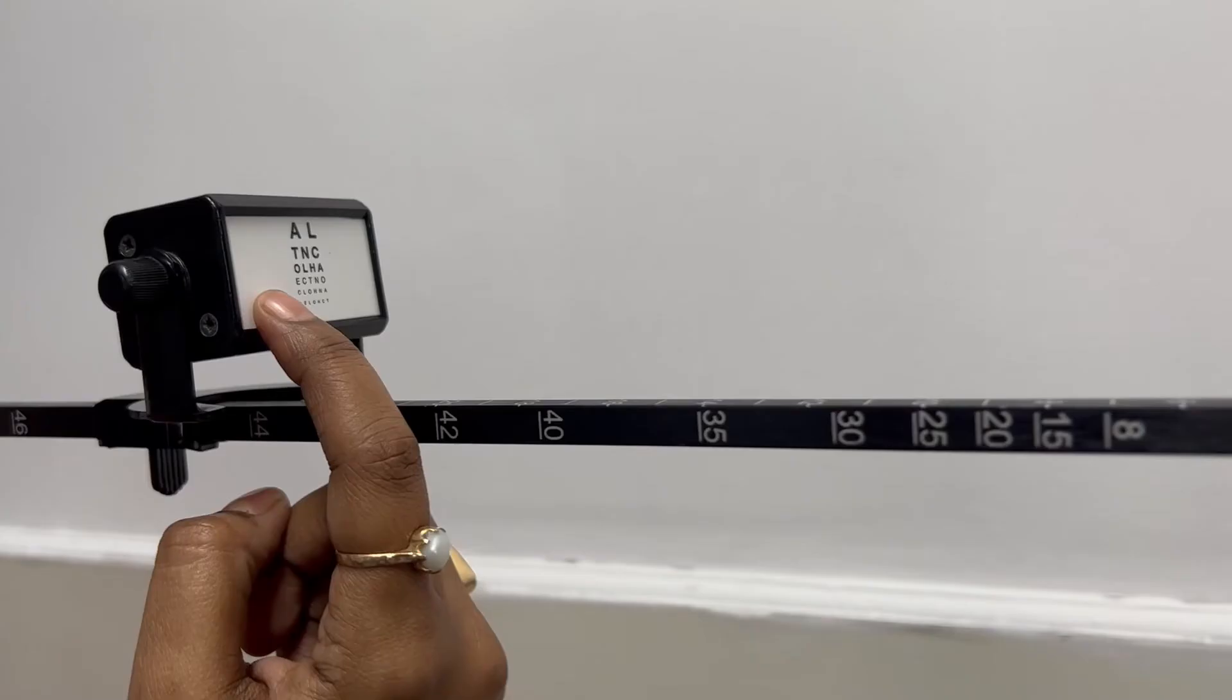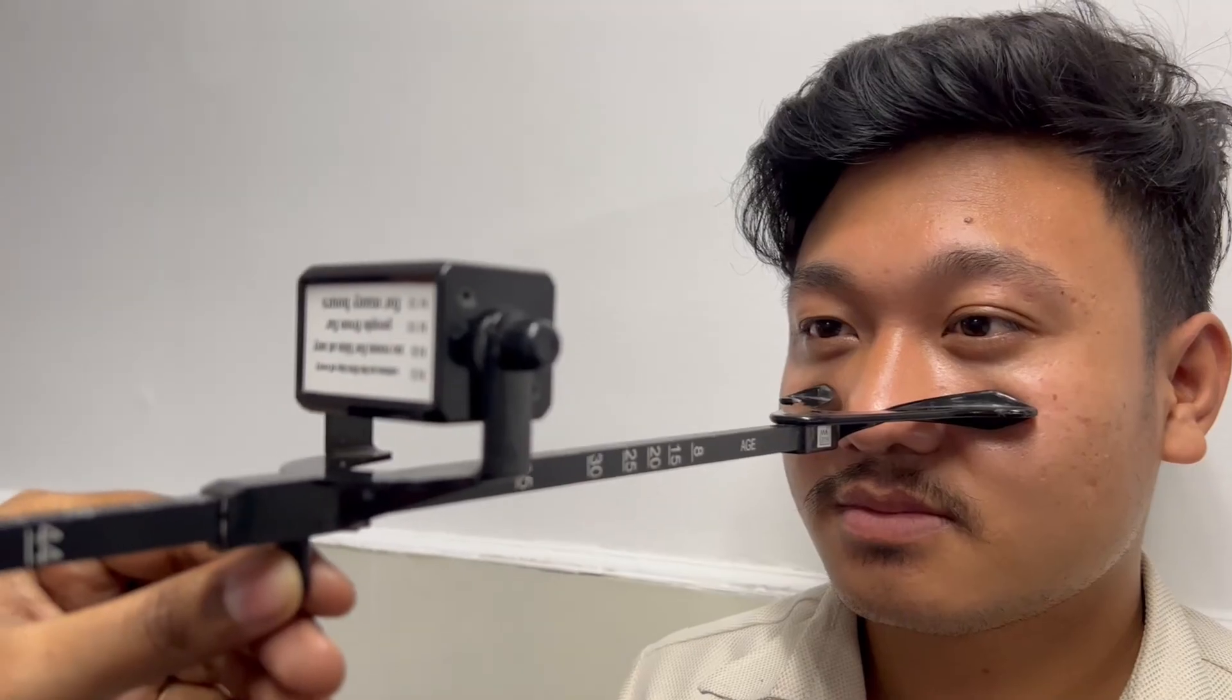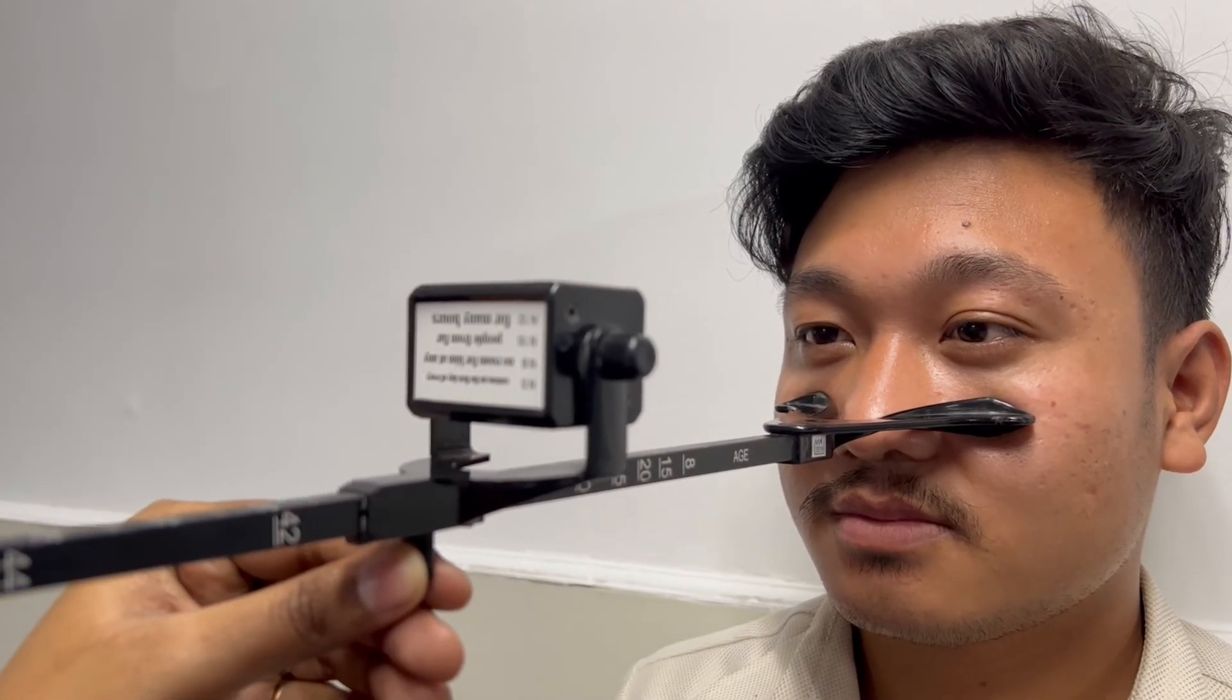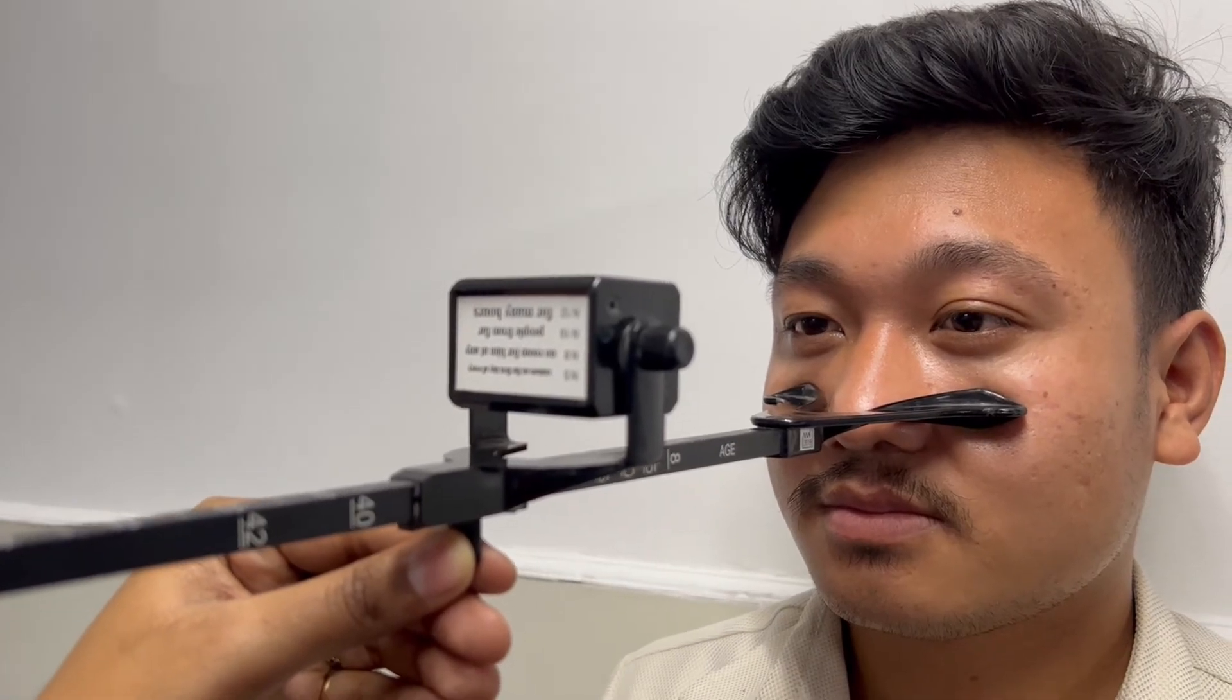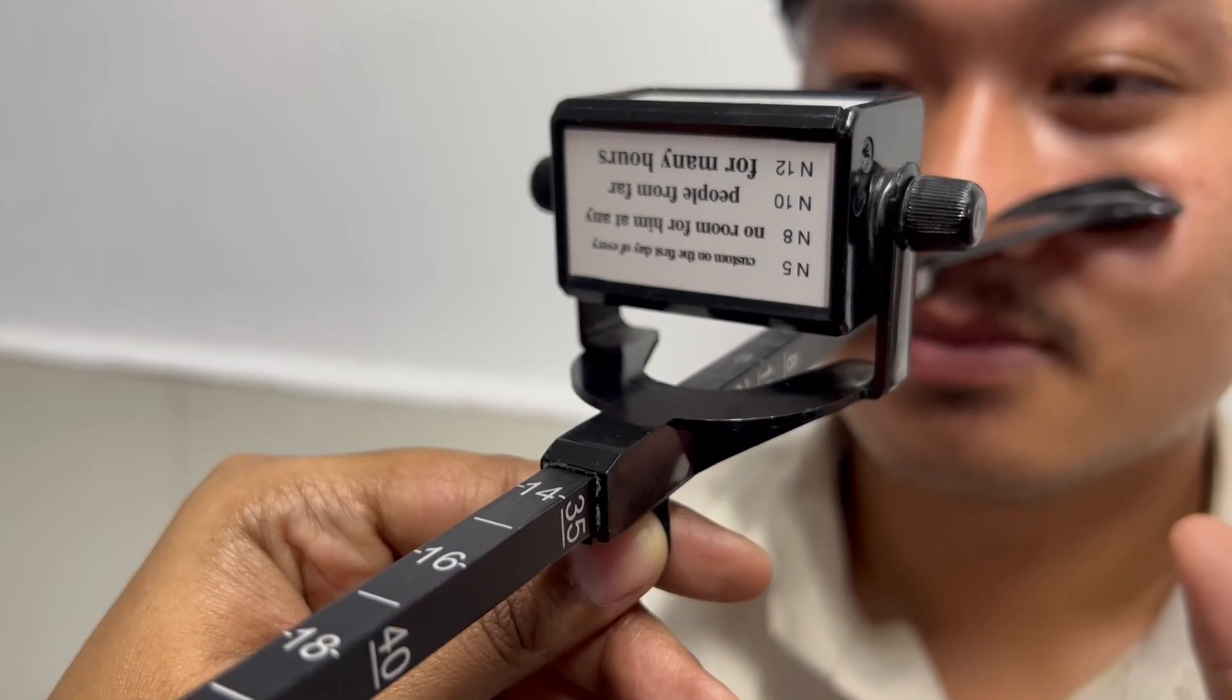Examiner asks the patient to focus on one line above the best corrected letters in the chart and slowly moves the target towards the patient's eyes at a constant linear speed. The near point of accommodation is noted when the patient reports the first sustained blur.